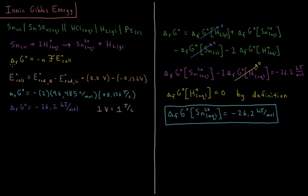From the Nernst equation, the standard Gibbs energy of this reaction equals negative n times Faraday's constant times the standard EMF of the cell. The standard EMF equals the standard reduction potential of the cathode minus that of the anode. The cathode is the standard hydrogen electrode at 0.0 volts, minus the reduction potential for Sn²⁺ to Sn solid, which is −0.136 volts.